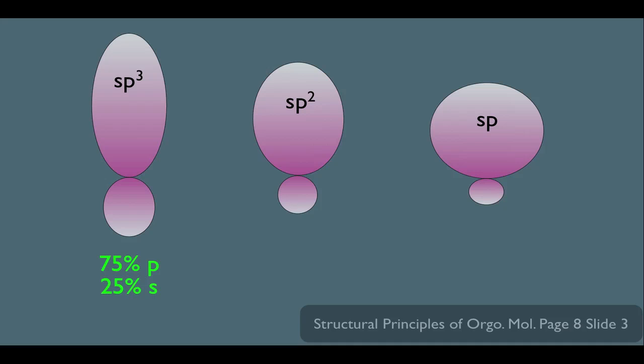Doing the same analysis on the sp2 hybridized orbital, he would be technically 67% p and 33% s, simply because he's a third s and two thirds p. So he's still more p than he is s, but he has more s character than the sp3 hybridized orbital, so he's a little shorter and more blunted.